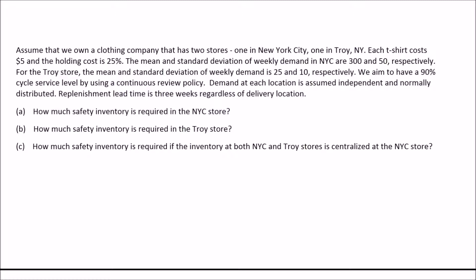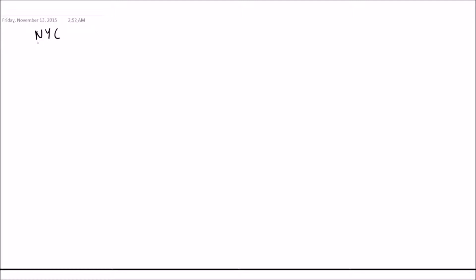Our goal is to have a 90% cycle service level and we use a continuous review policy. We assume that demand at each location is independent and normally distributed, and the replenishment lead time is 3 weeks regardless of delivery location. We want to find how much safety inventory is required in the New York City store, in the Troy store, and if the inventory at both locations is centralized at the New York City store. Since this is a continuous review policy, we will use the formulas for this policy.